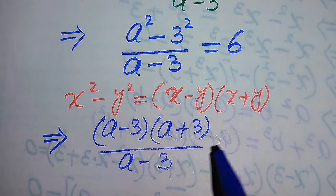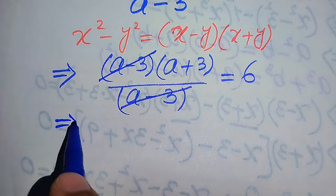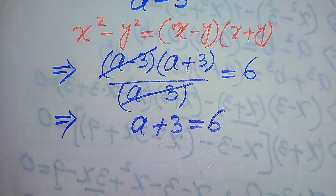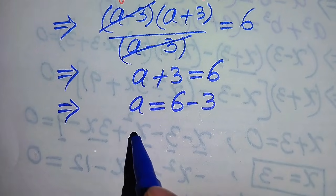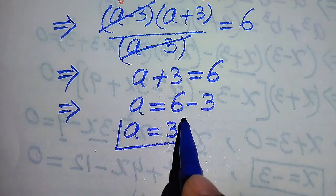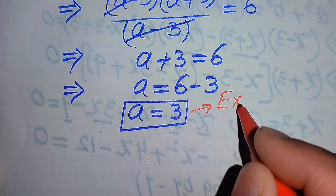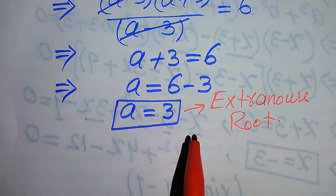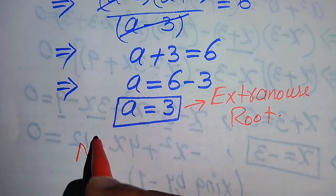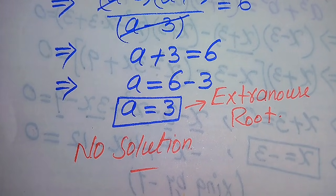We see that a minus 3 cancels out, leaving a plus 3 equals 6. Moving 3 to the right hand side, we get a equals 6 minus 3, so a equals 3. As already verified in the first method, a equals 3 is an extraneous root because it does not satisfy the original equation. We cannot get any other value of a, so this question has no solution. Thank you for watching — please subscribe to my channel for more videos.